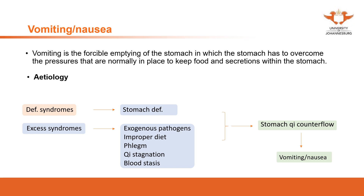For nausea and vomiting, whenever you see these conditions you are going to differentiate into deficiency and excess patterns. These are all very similar to stomach ache patterns, but no matter what kind of pathogen is involved, as long as it results in stomach qi counter flow it will result in vomiting or nausea.